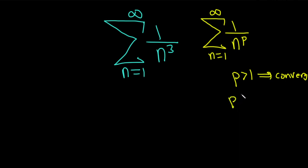And if p is less than or equal to 1, then we have divergence of this infinite series. So in this particular case, p is equal to 3, so we're going to have the convergence case.